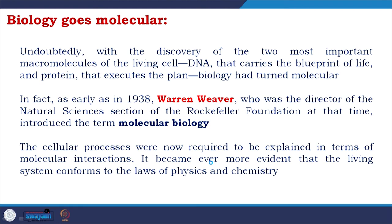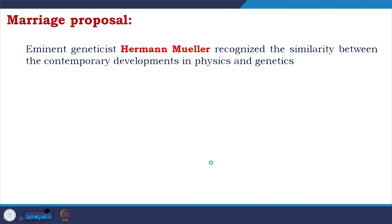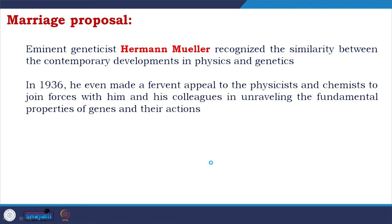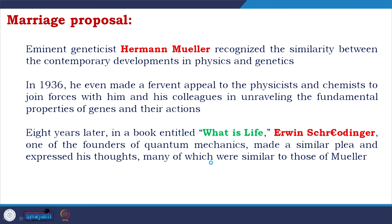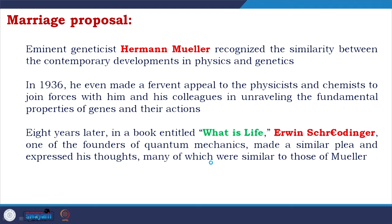It became even more evident that living systems conform to the laws of physics and chemistry. An interdisciplinary platform was going to be developed. Eminent geneticist Hermann Muller recognized the similarity between contemporary developments in physics and genetics. In 1936, he made a fervent appeal to physicists and chemists to join forces in unraveling the fundamental properties of genes. Eight years later, in a book entitled 'What Is Life?' Erwin Schrödinger — one of the founders of quantum mechanics — made a similar plea with thoughts many of which were similar to those of Muller.